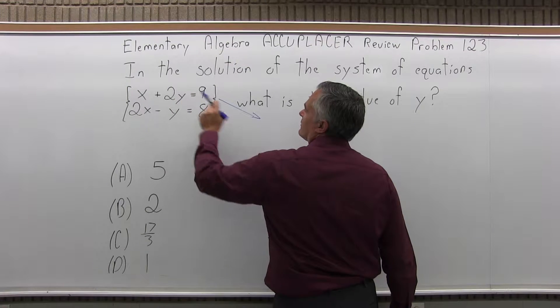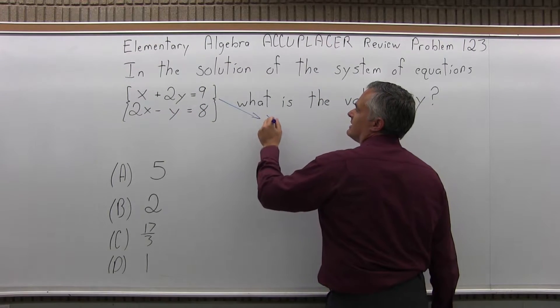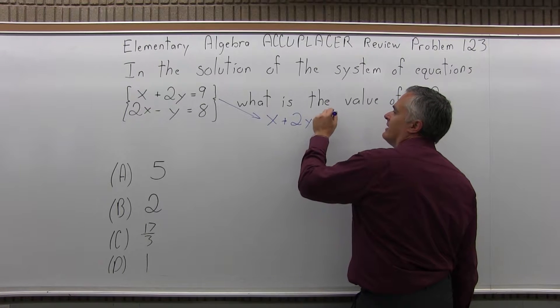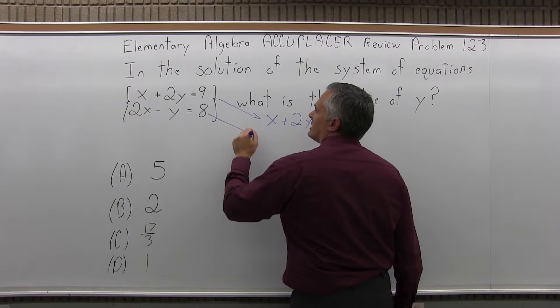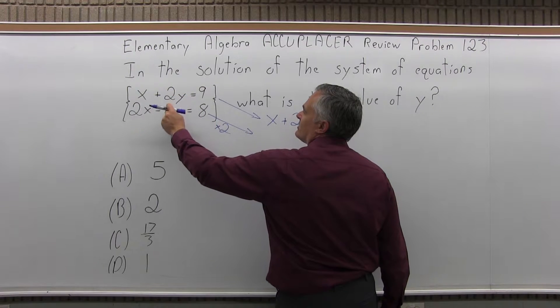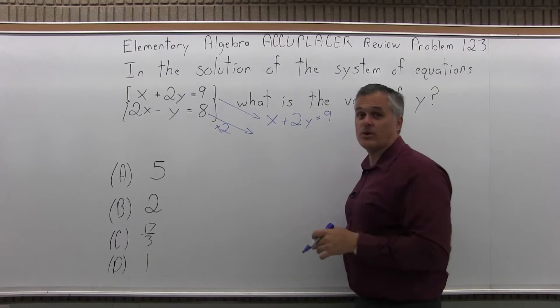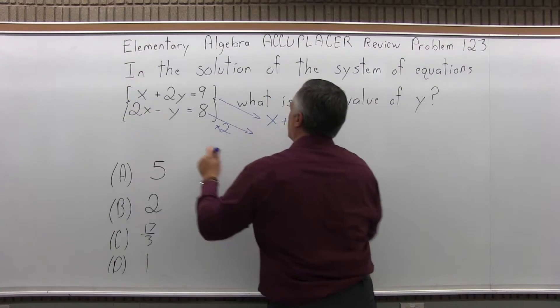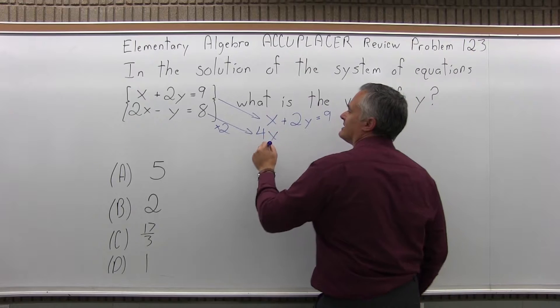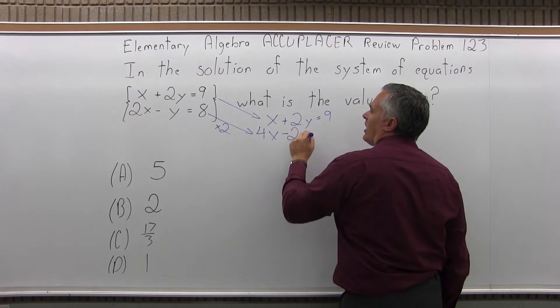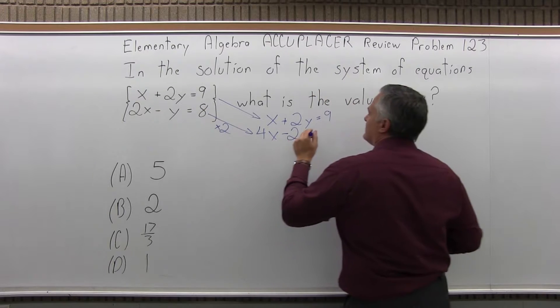So let me bring the first equation over just as is. Nothing will change. x plus 2y equals 9. And the other equation, I'm going to bring it over, but everything is going to get multiplied times 2. That'll give me a positive 2y and negative 2y. Same number in front of one of the variables, but opposite sign. So 2 times 2x is 4x. 2 times negative y is minus 2y. 2 times 8 is 16.